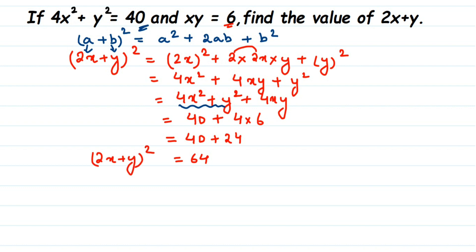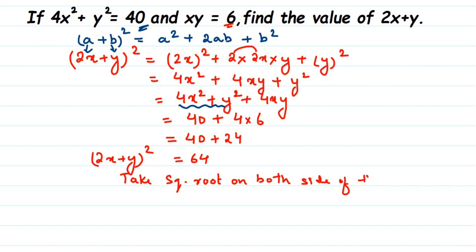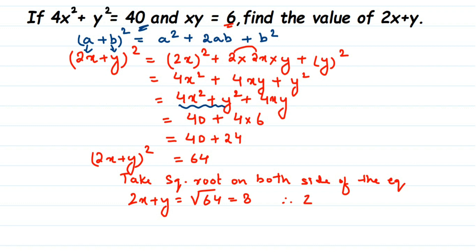To remove the square, we take the square root on both sides of the equation. When you take the square root on both sides, the square is removed. So the square and square root cancel on the left side, giving 2x + y. On the right side, we get √64 = 8. Therefore, 2x + y = 8.